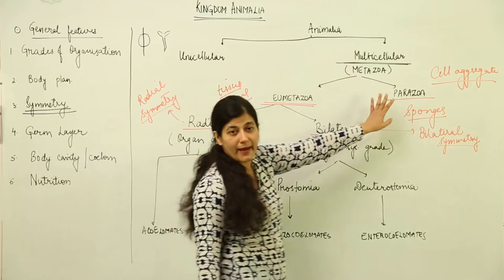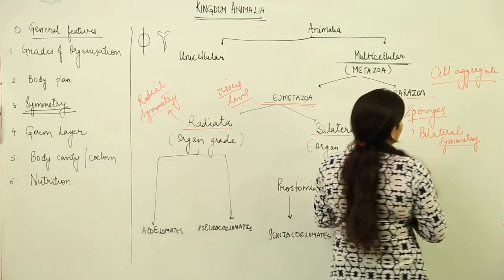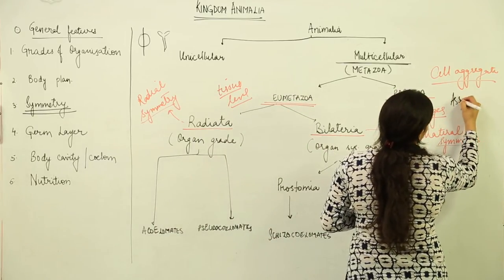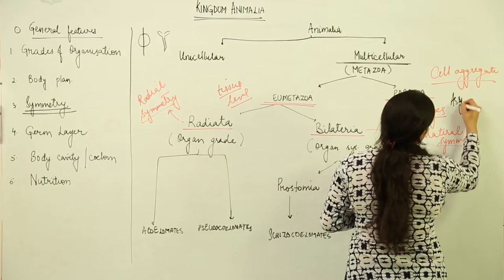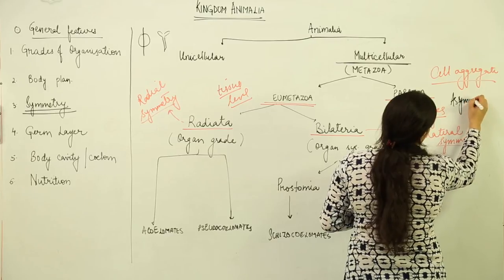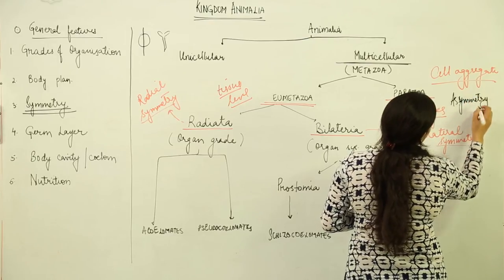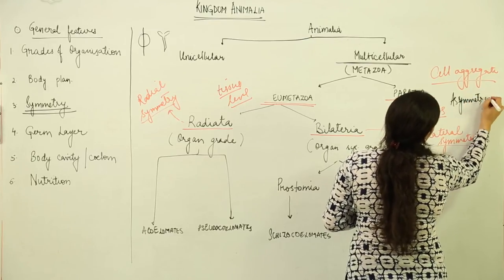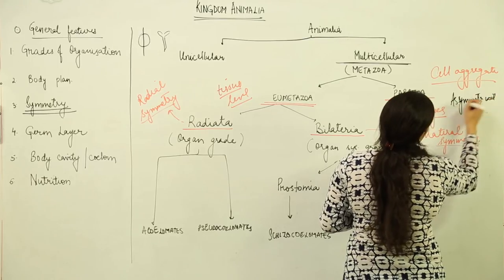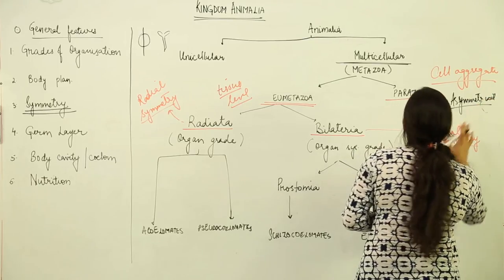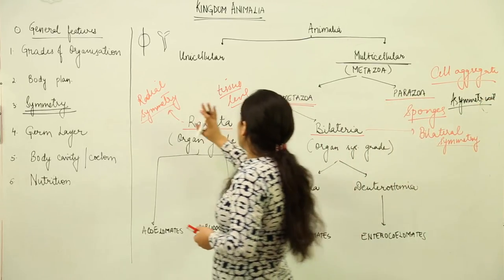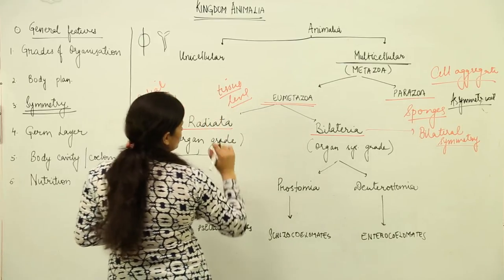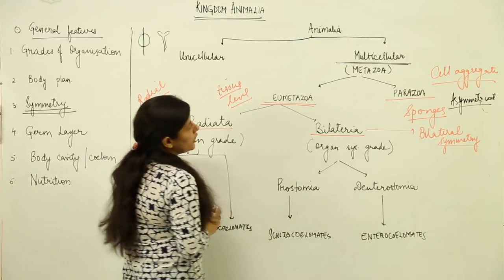Parazoans are undoubtedly asymmetrical — you cannot expect any symmetry in organisms whose cells are not arranged in an organized manner. So we have three types of organisms: asymmetrical, radially symmetrical, and bilaterally symmetrical.